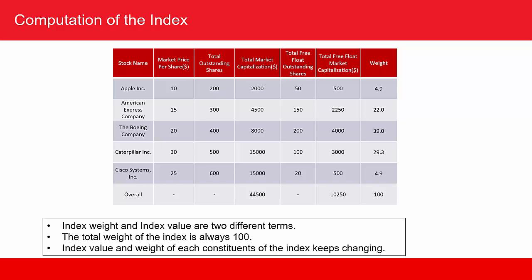The free float market capitalization is obtained by multiplying the total free float outstanding shares by the market price per share. The last column is weight. Weight is nothing but the ratio of the free float market capitalization of that particular stock to the free float market capitalization of the overall index. In this case, Apple has a weight of 4.9% because the total free float market capitalization of Apple is $500 and the overall free float market capitalization of all five stocks together is $10,250, so Apple's weight is 500 divided by 10,250.